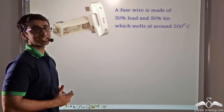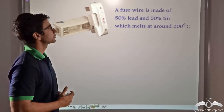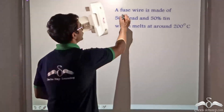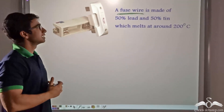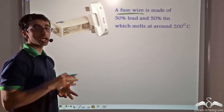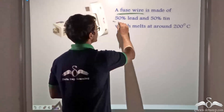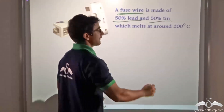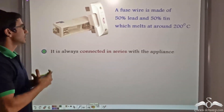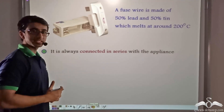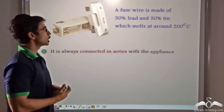Joule heating is not always disadvantageous — it can be used to our advantage as well. The picture shown is that of a fuse wire. A fuse wire is a device usually encased in a porcelain container and used for the protection of circuits. A fuse wire is an alloy of 50% lead and 50% tin, and the melting point of this alloy is 200 degrees Celsius. A fuse wire is always connected in series with any appliance in order to protect it.